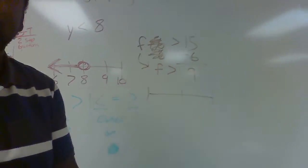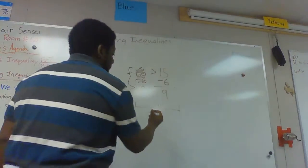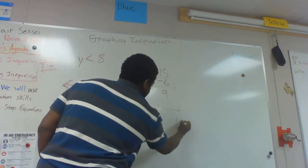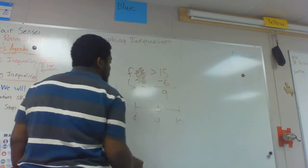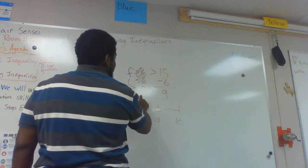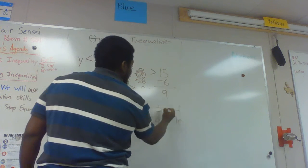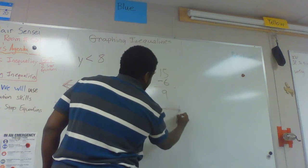So we know f is greater than 9 is my answer from this problem doing the one-step equation. Now I can make my graph with 9 in the middle: 8, 9, 10. Greater than means I have an open circle, and since my answer is greater than 9, everything greater than 9 could be an answer choice.